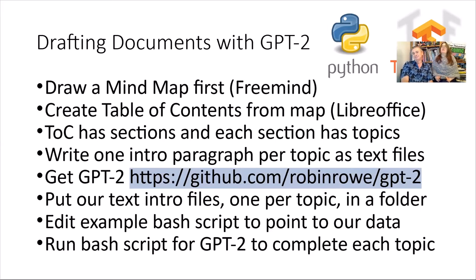Put our text intro files — one per topic — in a folder. Edit the example bash script to point to our data, which I'll show you in just a minute. Run the bash script for GPT-2 to complete each topic, and then go for coffee or lunch depending on how long your document is. It's pretty fast, but it just sits there and chews — it doesn't really do anything exciting to show you on screen.